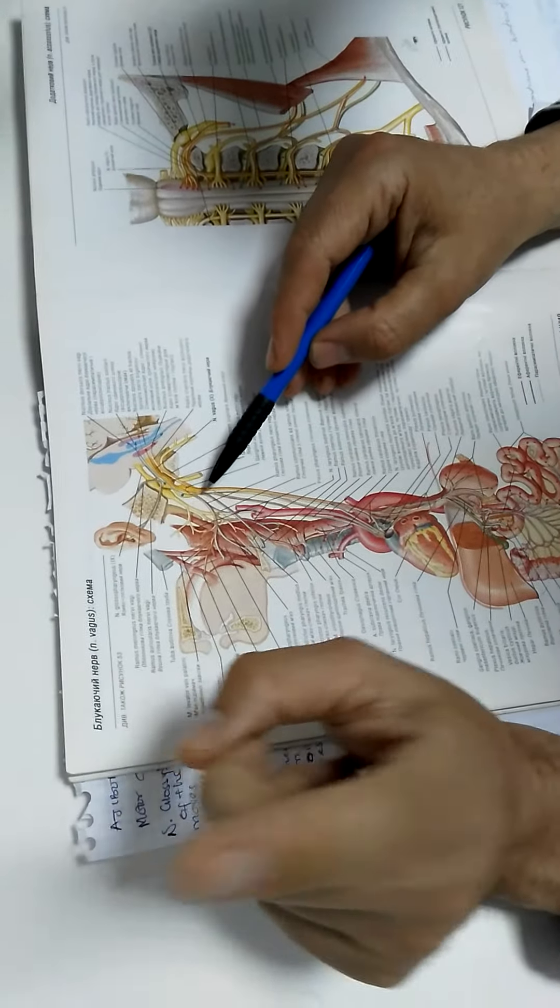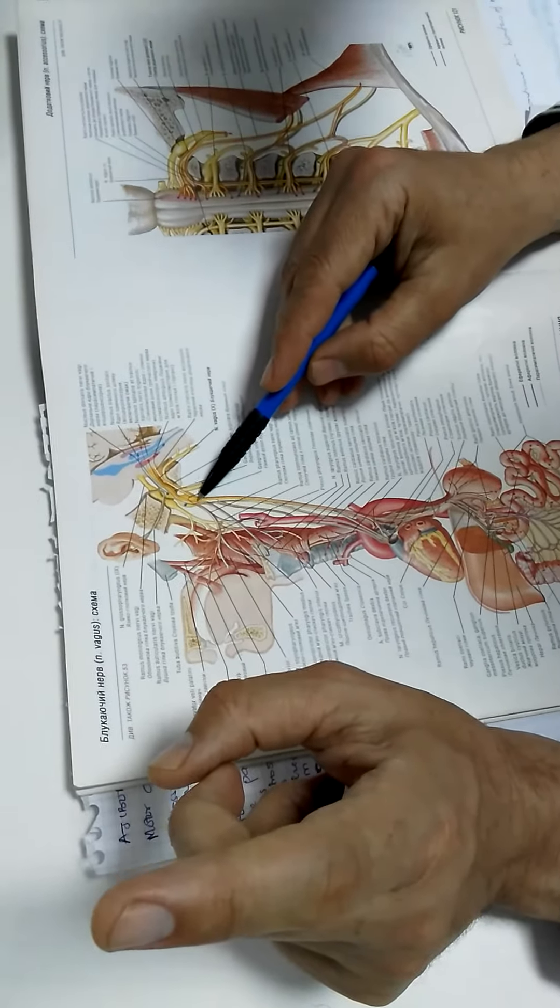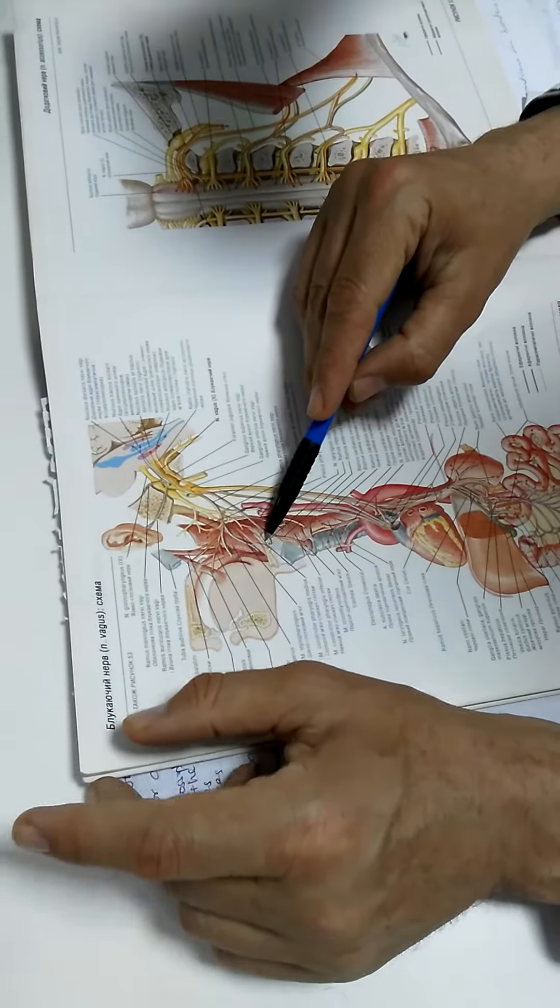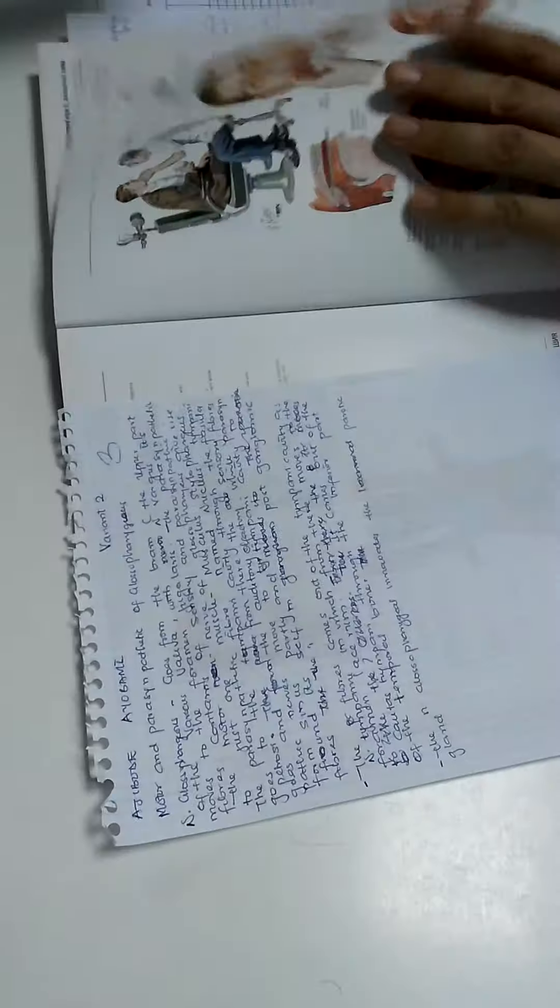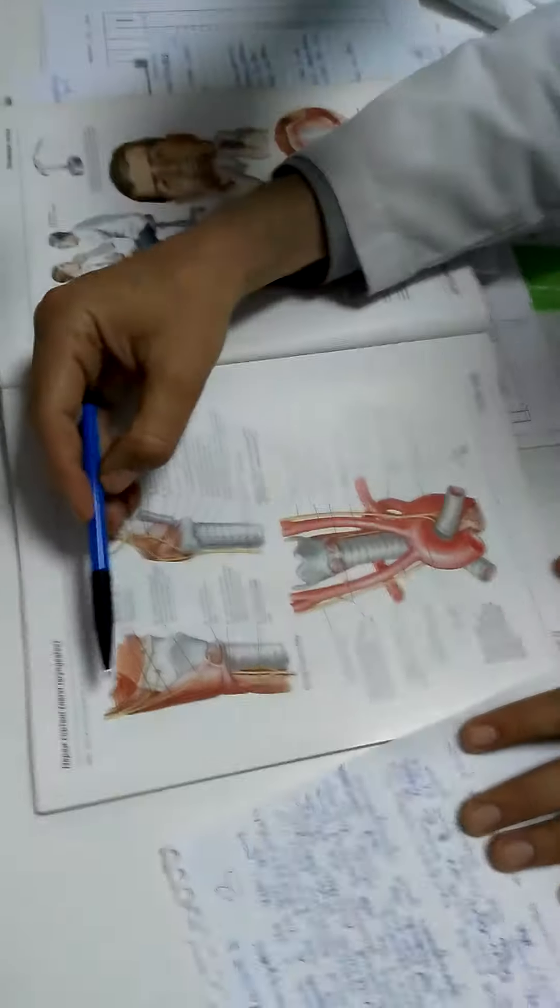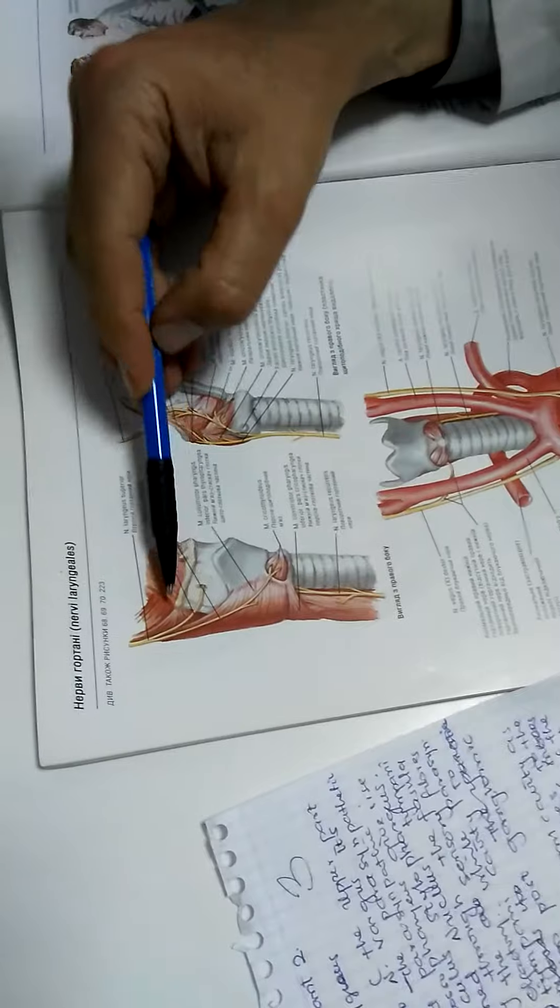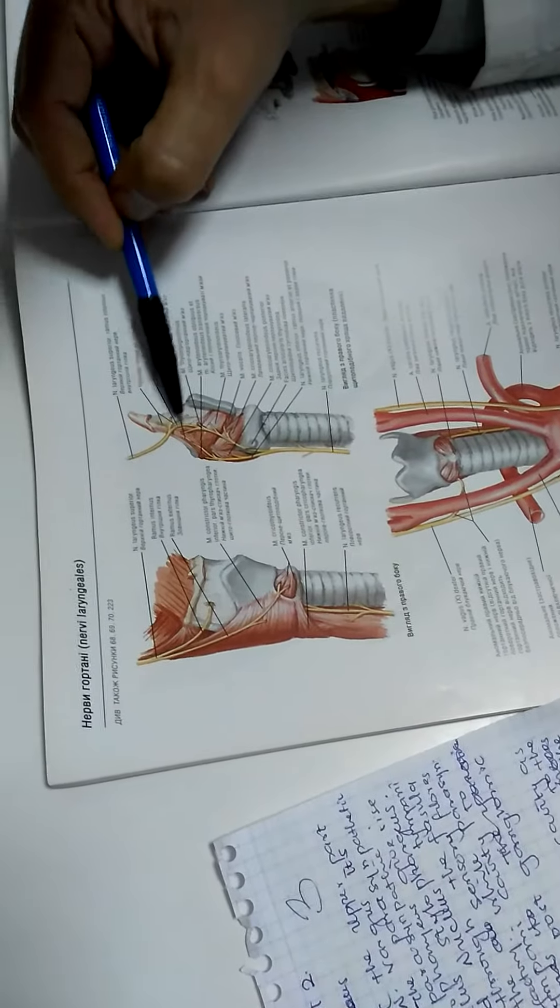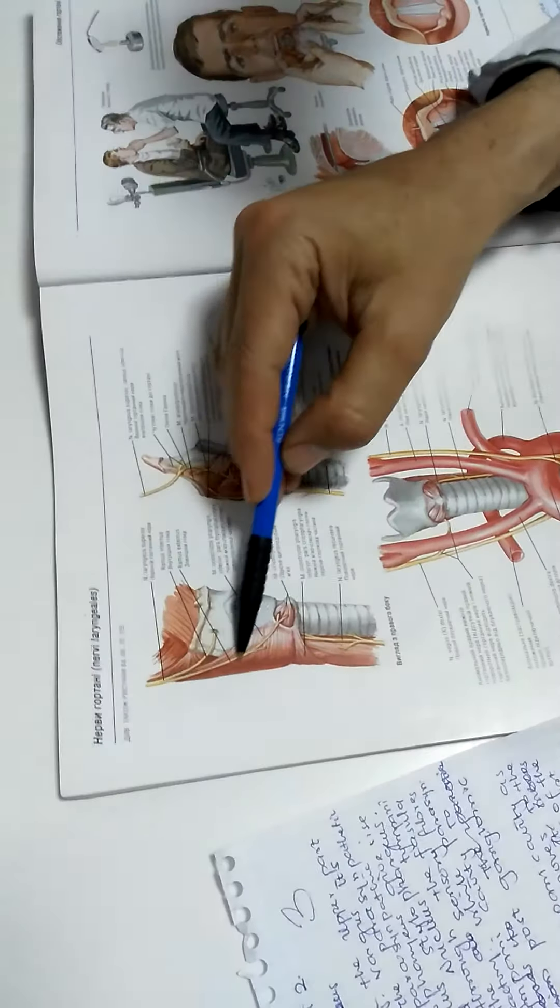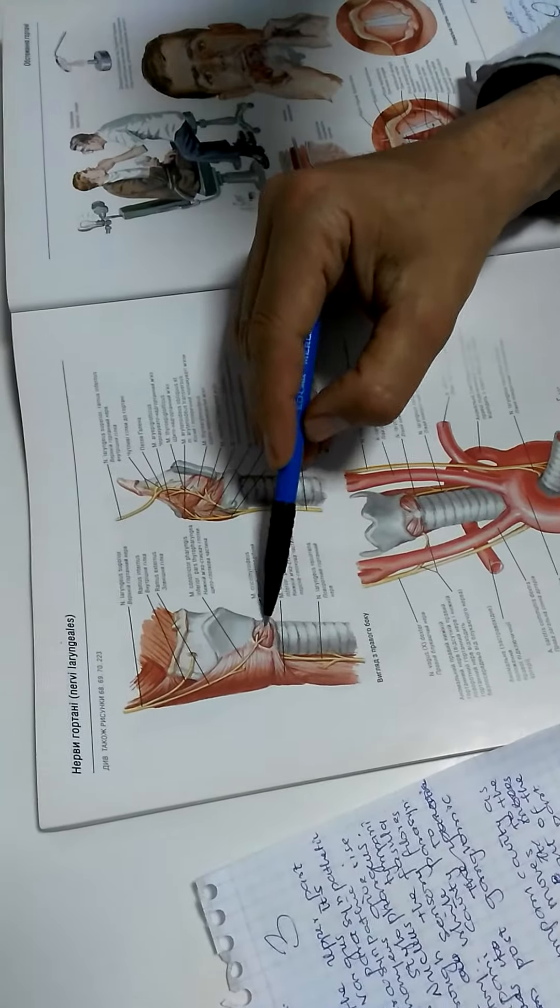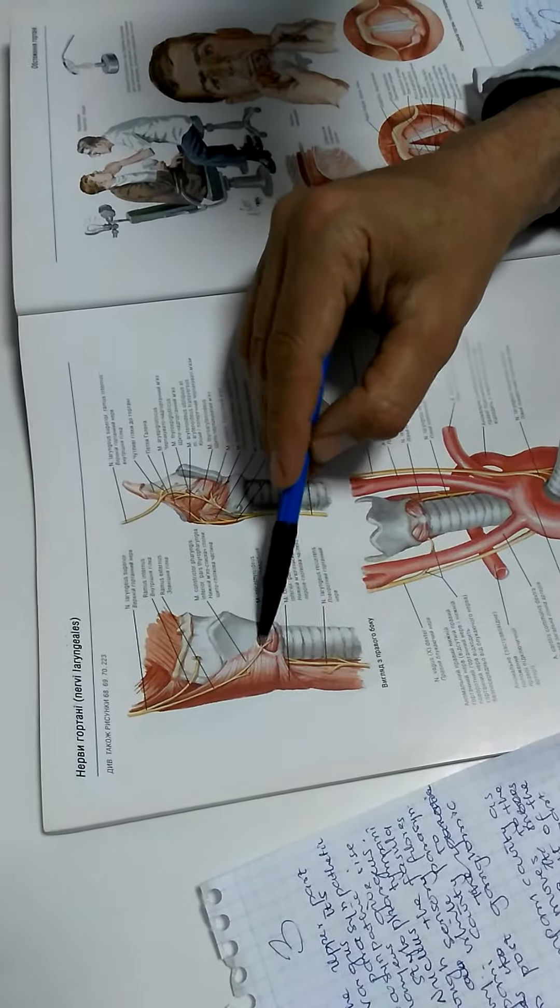Next, nervus laryngeus superior, laryngeal nerve, which gives internal and external branches. Internal branch penetrates the membrane and innervates everything above the vocal cords. External branch goes to musculus cricothyroideus.